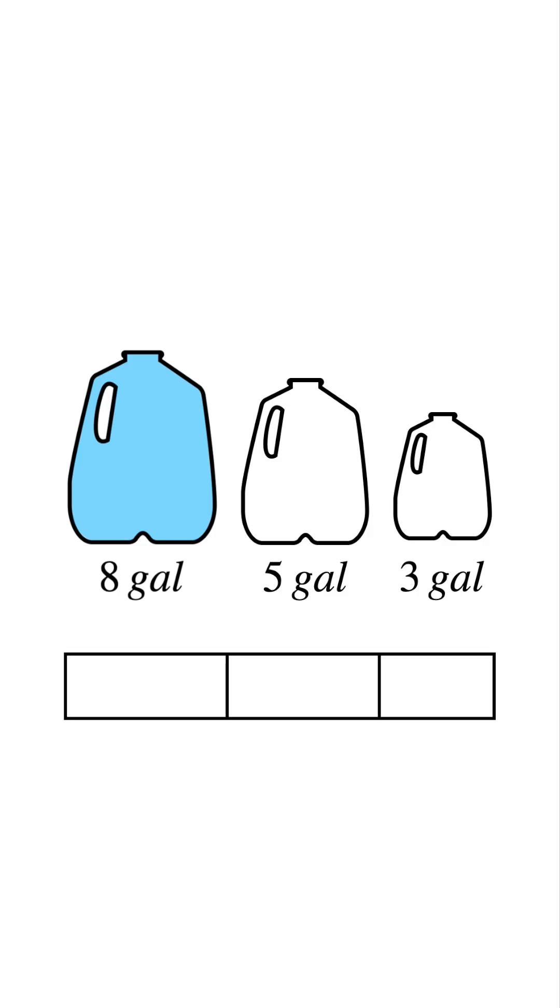Alright, let's do it step by step. We start with the 8-gallon jug full and the remaining jugs empty. Then pour from the 8-gallon jug into the 5-gallon jug. Now the 5 is full and the 8 has 3 left.